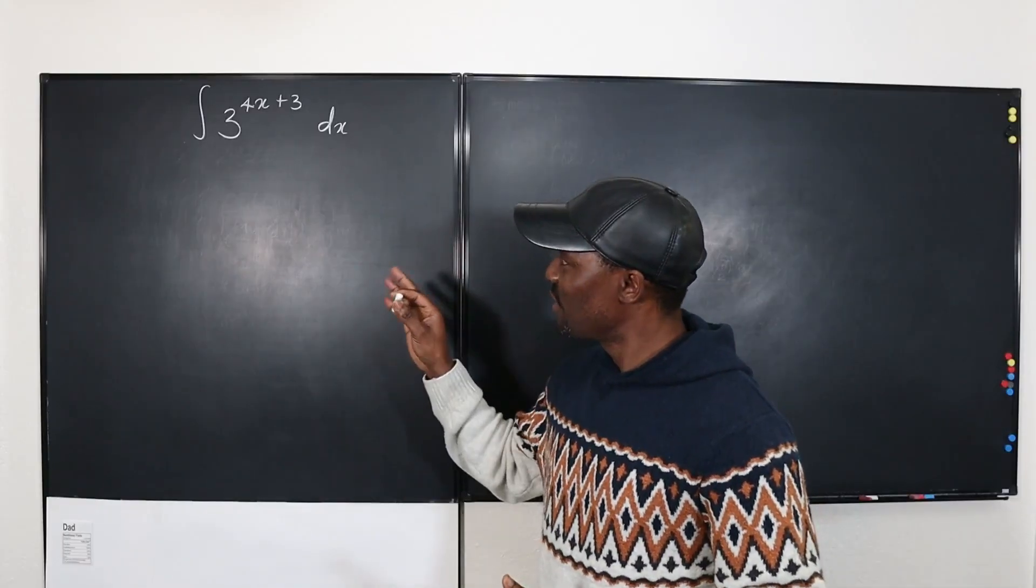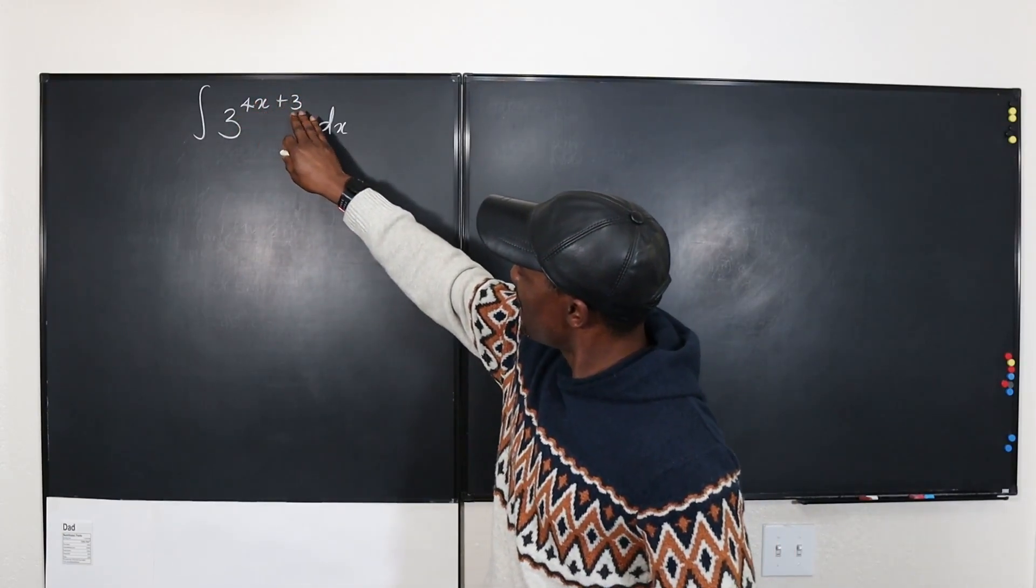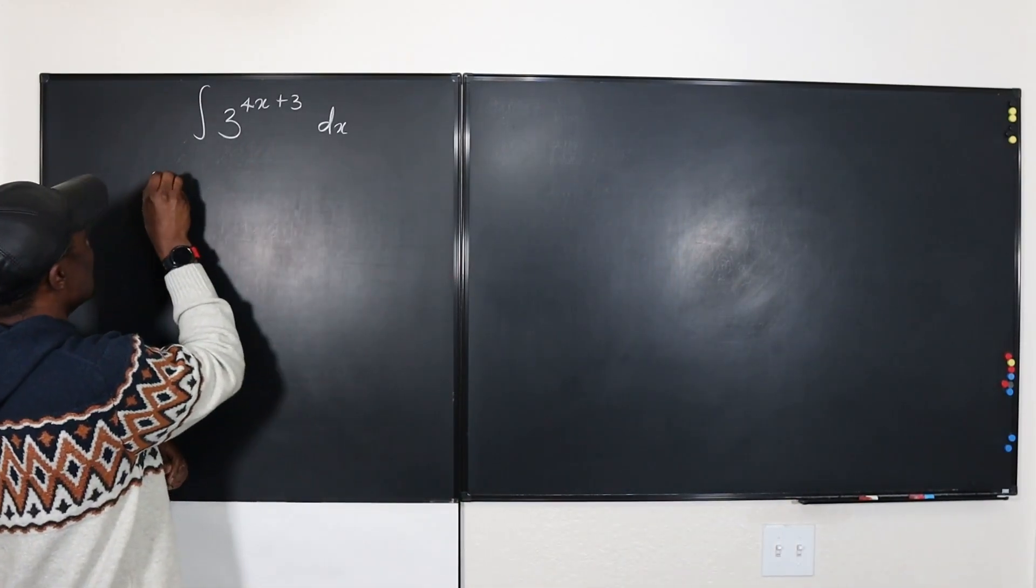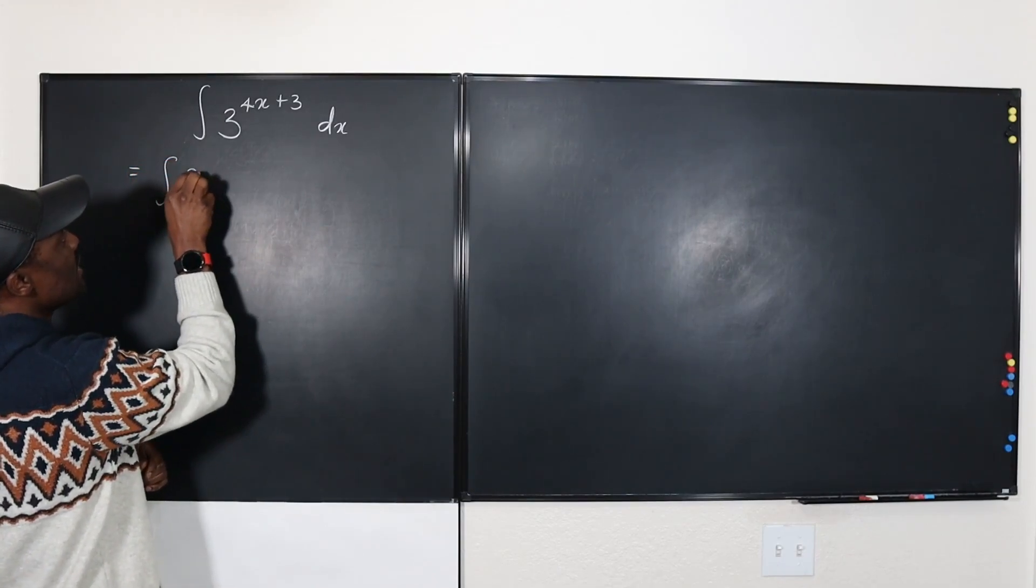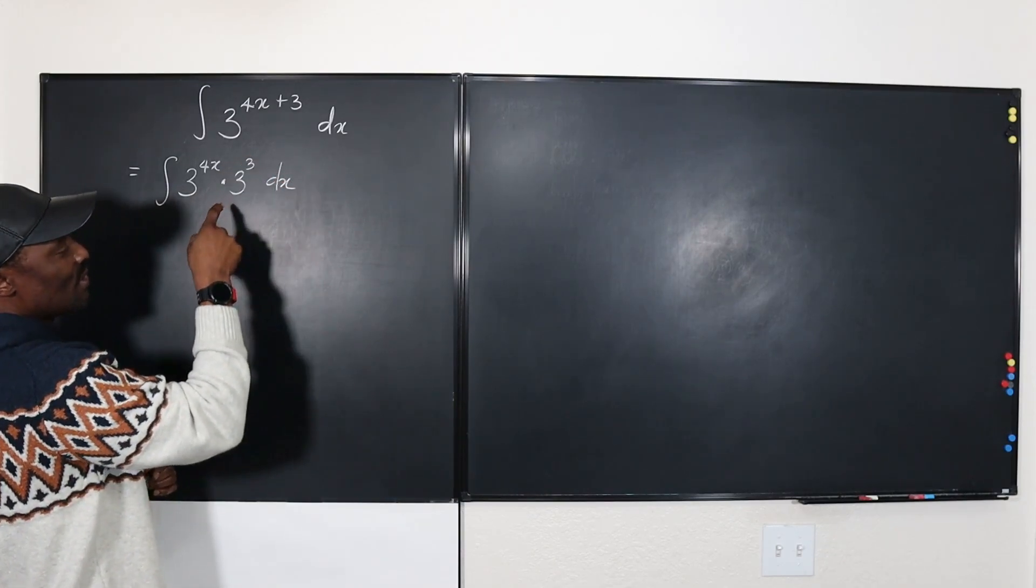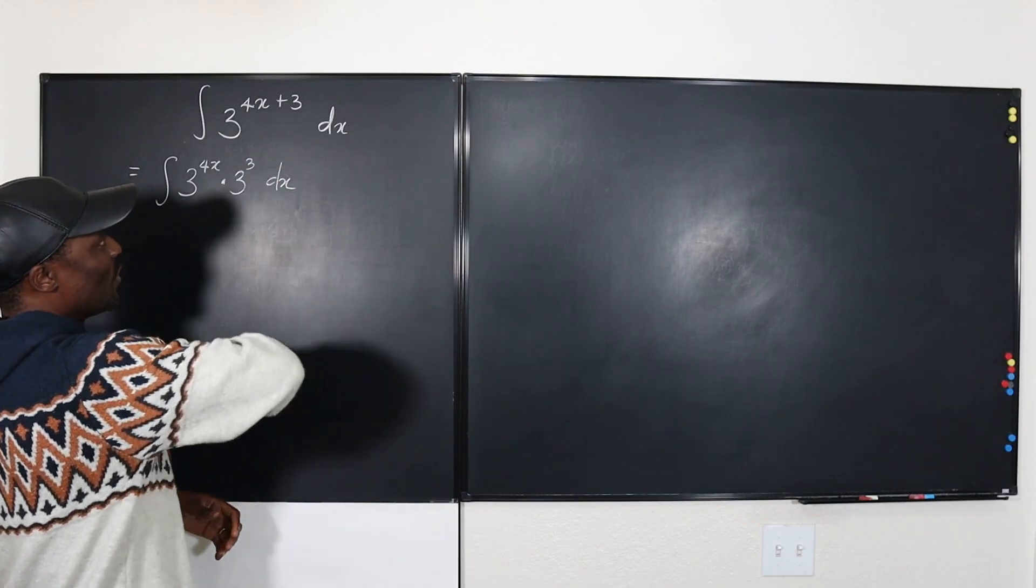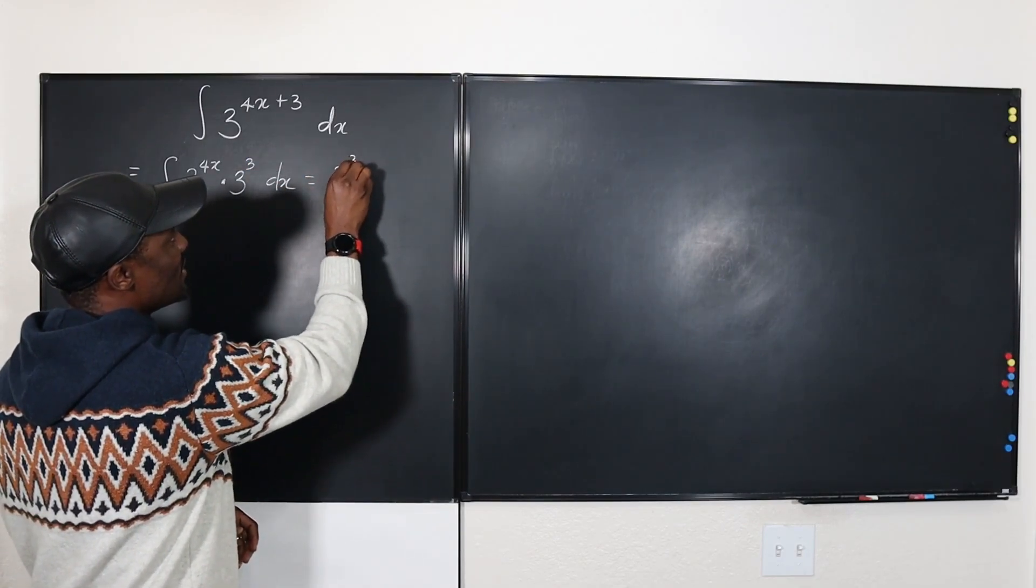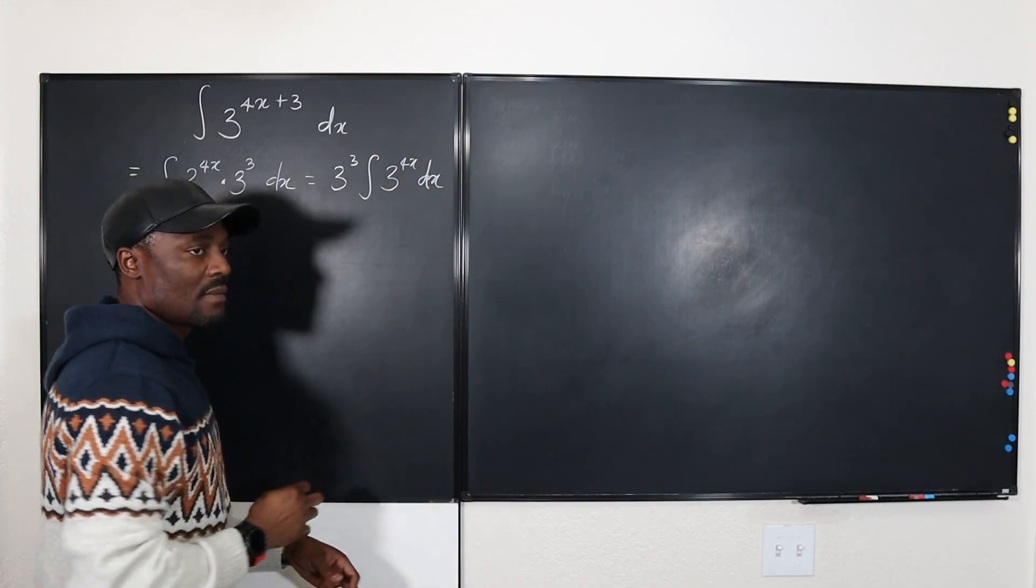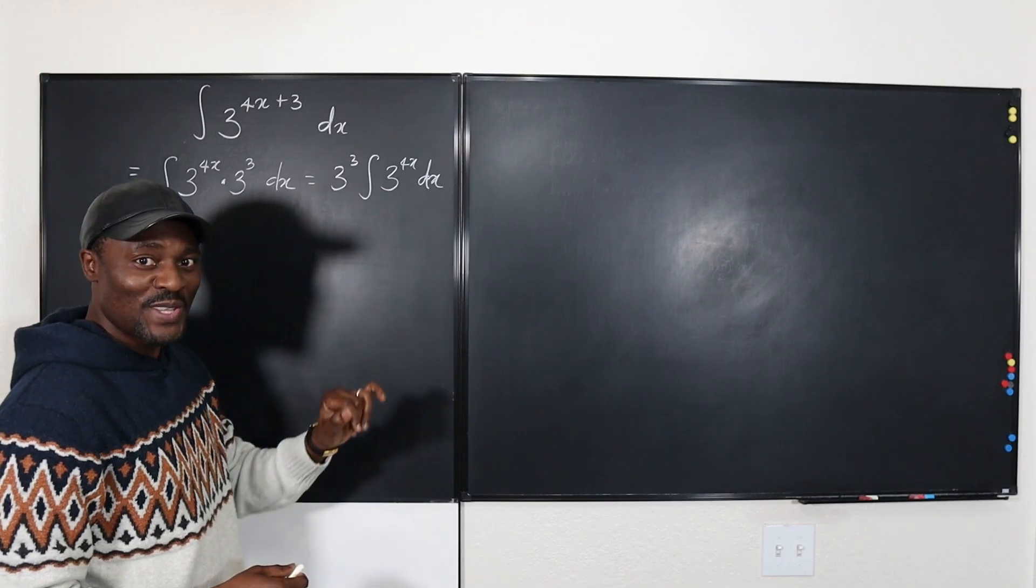If you take a closer look at this problem you will notice there's an exponent here and you can actually rewrite this. This integral is the same thing as the integral of 3 to the 4x multiplied by 3 to the third dx, which 3 to the third is a number. So I can move this all the way to the back. It's the same thing as 3 to the third multiplied by the integral of 3 to the 4x, and I can also rewrite this expression as 81 raised to the x power.